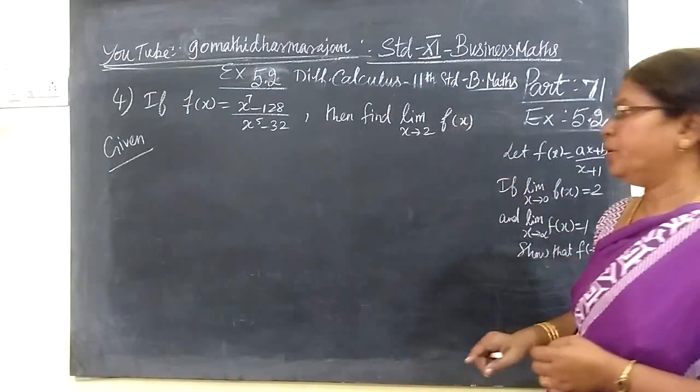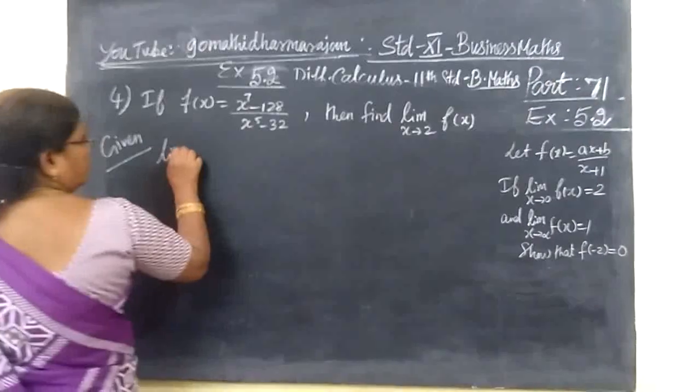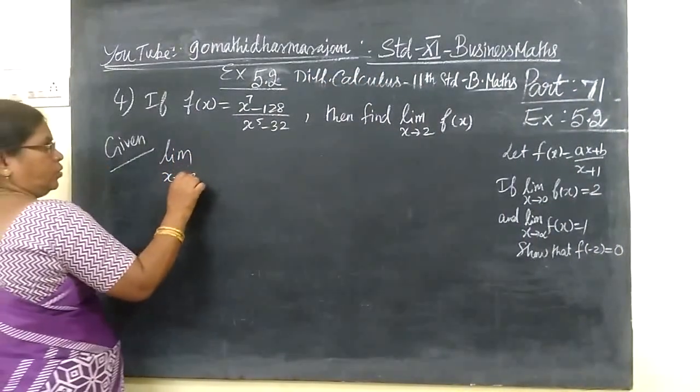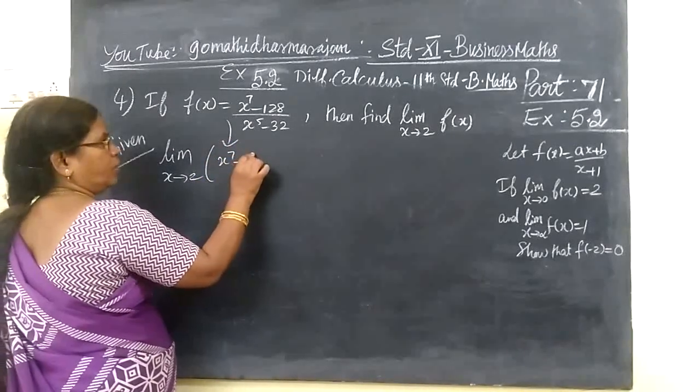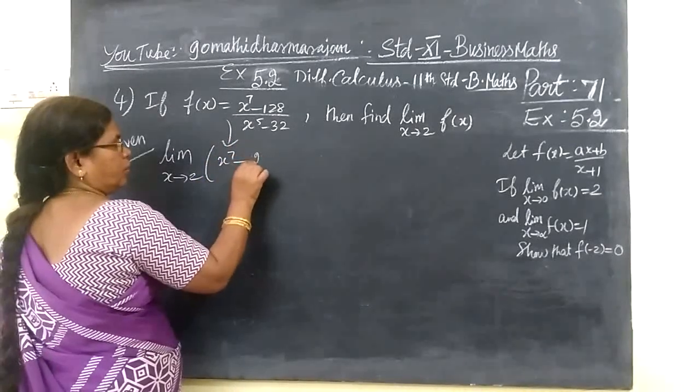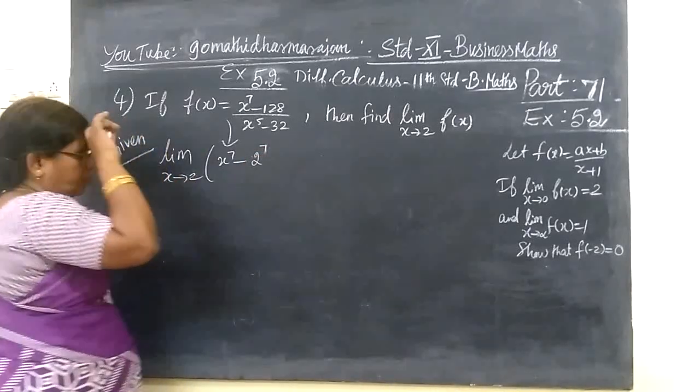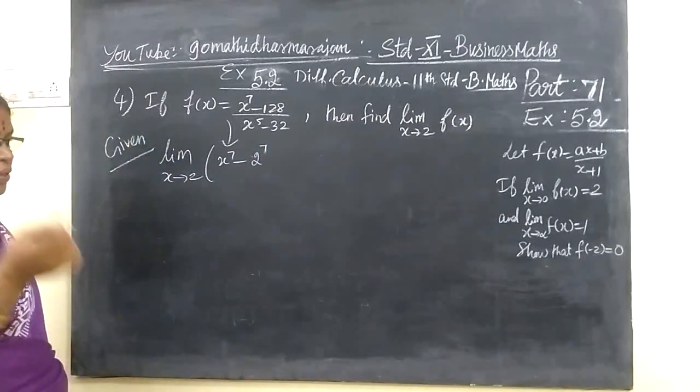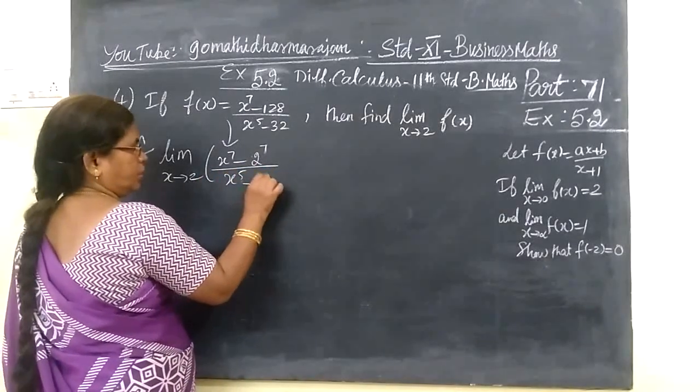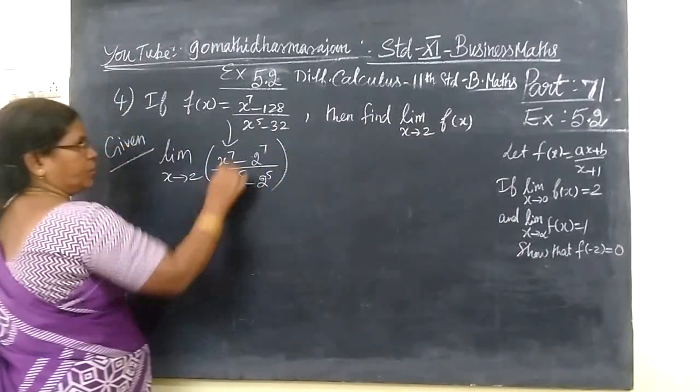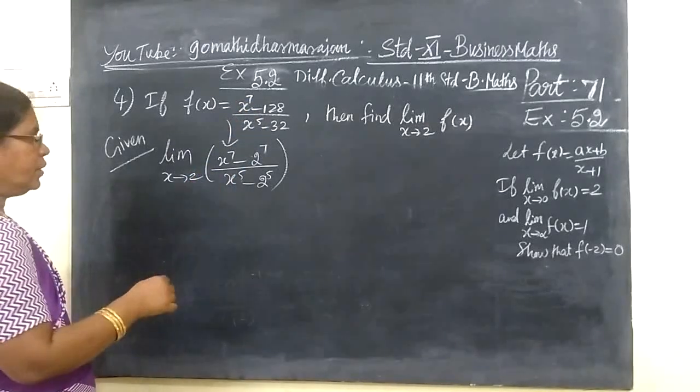Limit only, so limit as x tends to 2. F of x is x power 7 minus 128. How you can write? 2 power 7, which is 128.